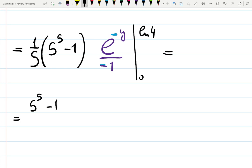5 to the 5 minus 1 over 5, we could actually calculate this number but whatever. And negative sign, let's put this negative in front of here. Then it will be e to the minus ln 4 minus e to the 0. Remember e to the 0 is not 0.